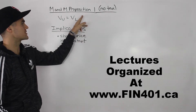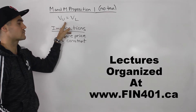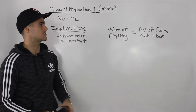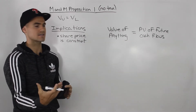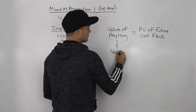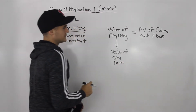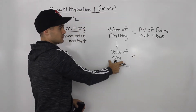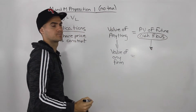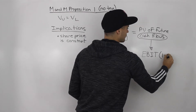Before finishing this video on this proposition, I want to go over another important implication that happens when the value of an unlevered firm equals the value of a levered firm. Way back, we mentioned that the value of anything in finance is always equal to the present value of all of that asset's future cash flows. So the value of any firm is the present value of all its future cash flows. A good representation of the cash flows of a firm is earnings before interest and taxes on an after-tax basis.